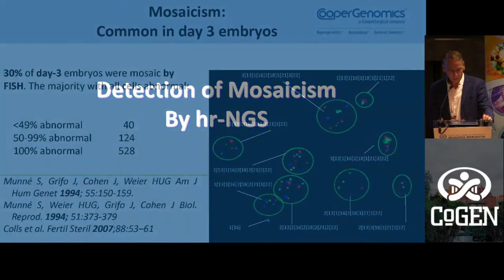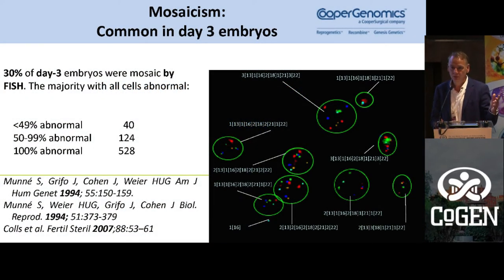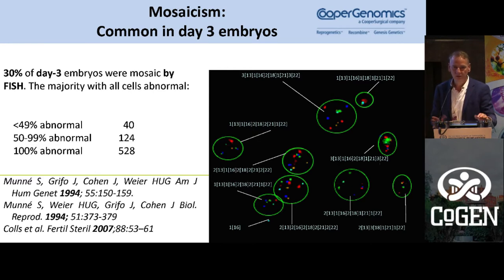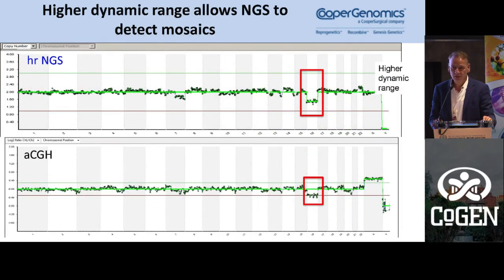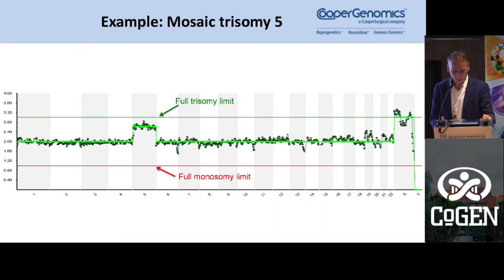Mosaicism is not new. There are lots of papers from the 1990s and 2000s showing analysis of all cells at cleavage stage and at blastocyst stage using FISH, and all these studies show more or less the same rate of mosaicism we are finding now at blastocyst stage. It's not that switching from array CGH to NGS caused us to find mosaics — mosaics have been with us and we've been transferring them for a long time. This is an example comparing NGS with array CGH: a sample classified as monosomic by array CGH is now classified as mosaic by NGS.